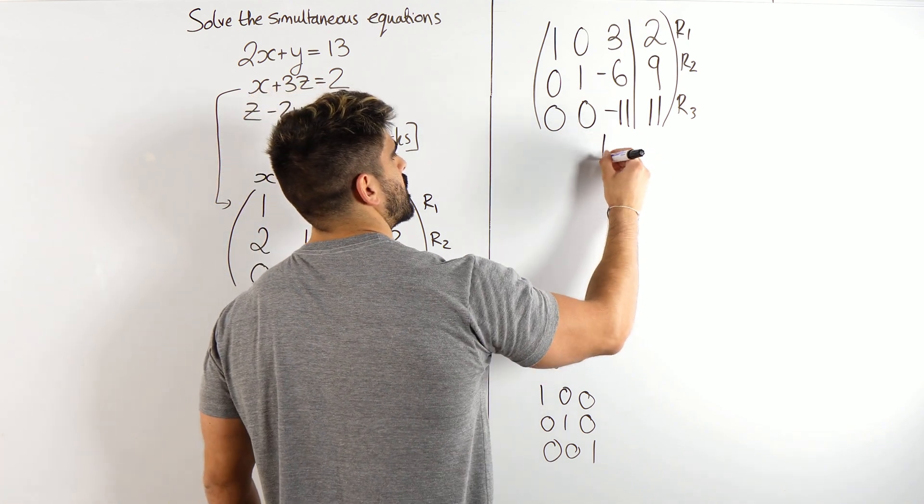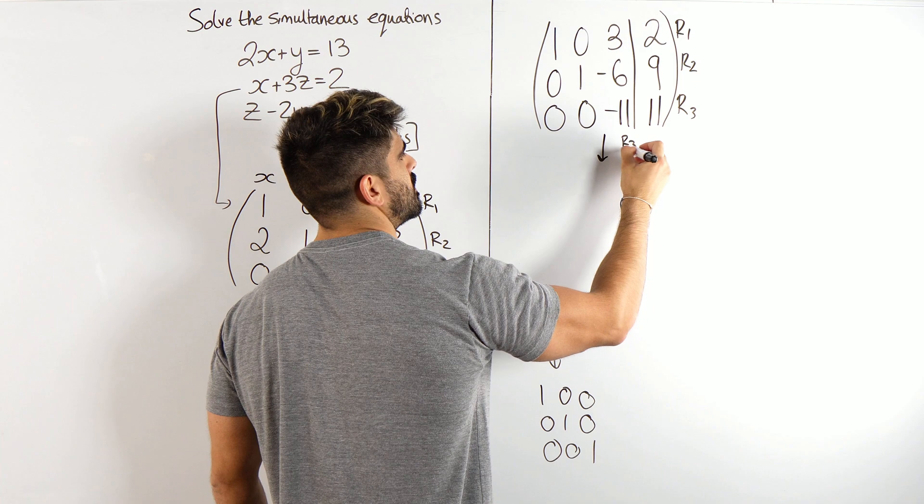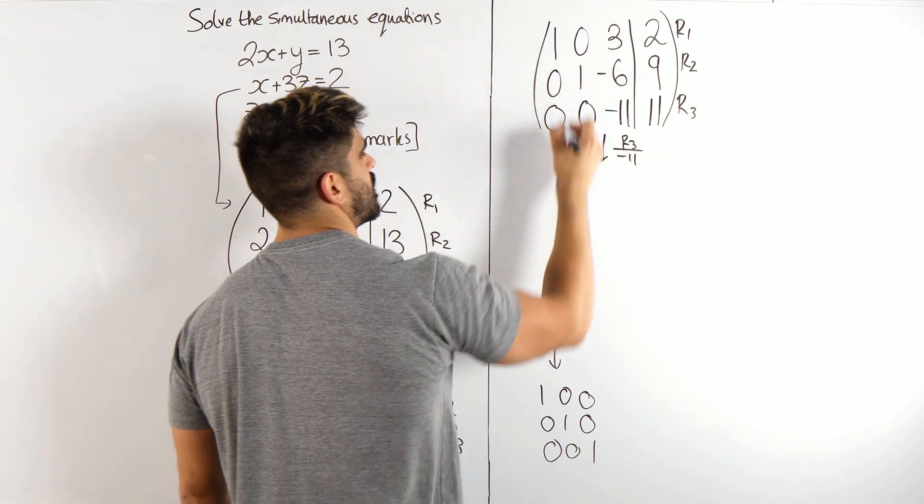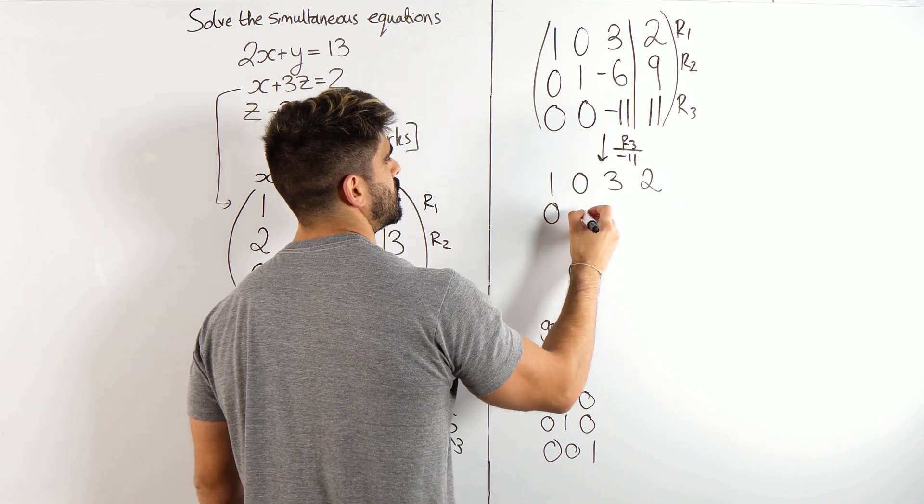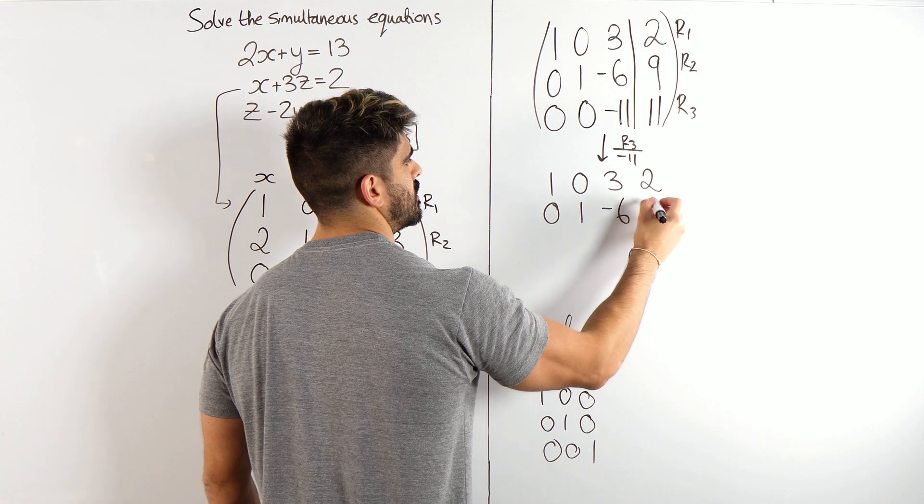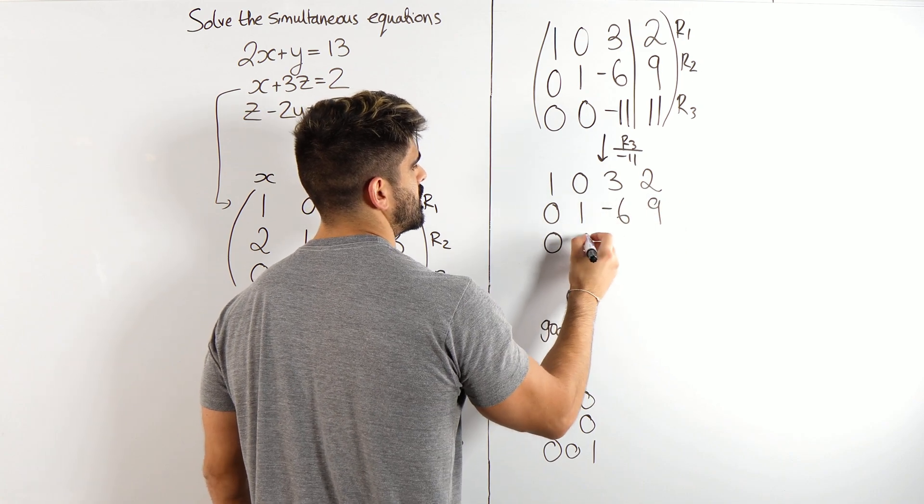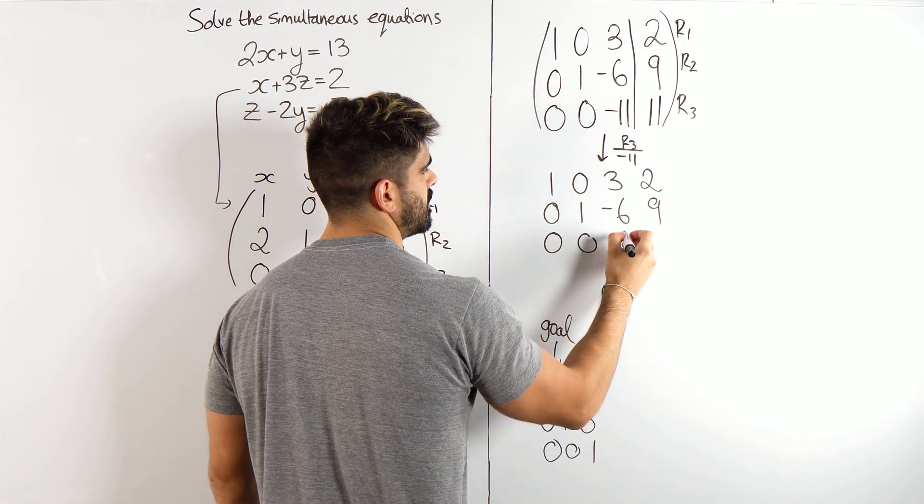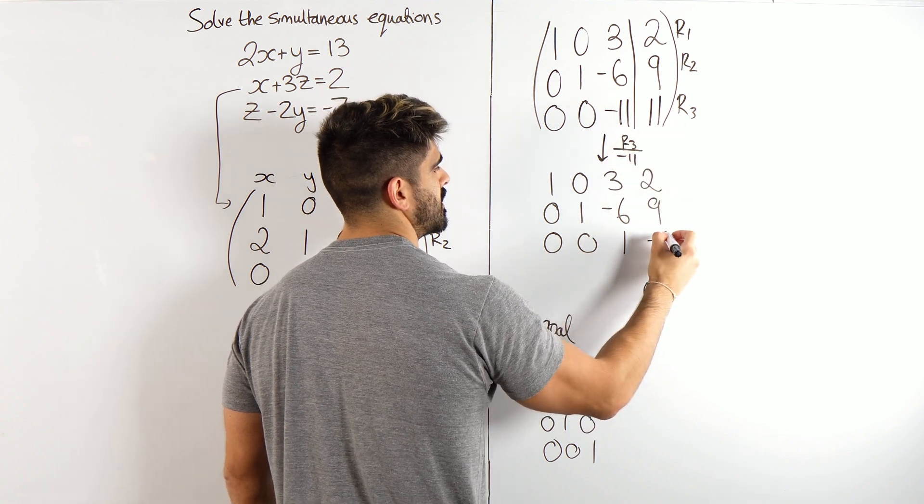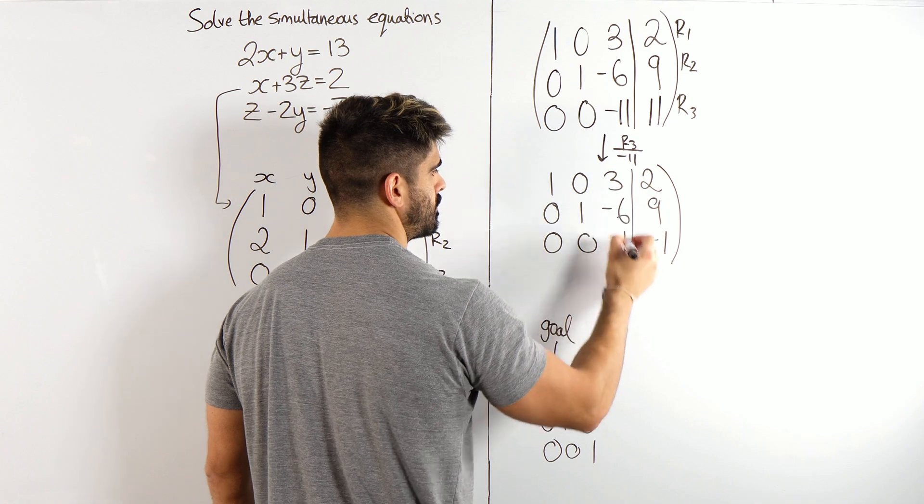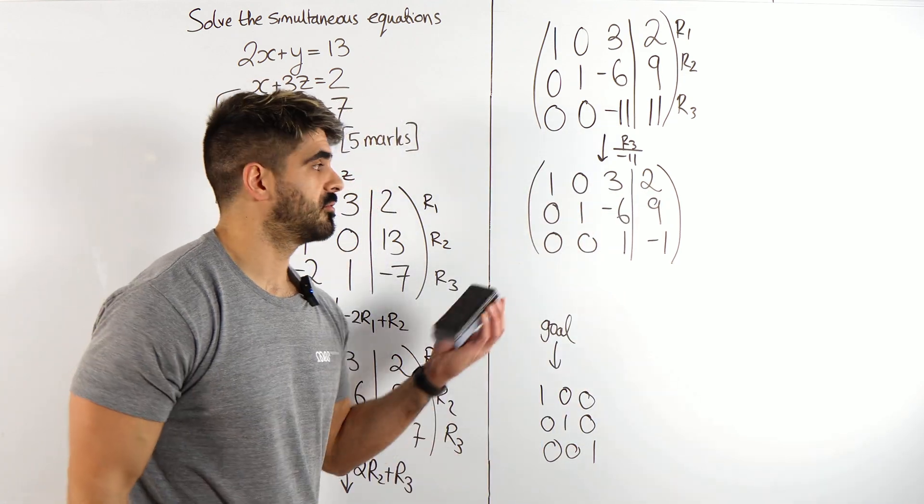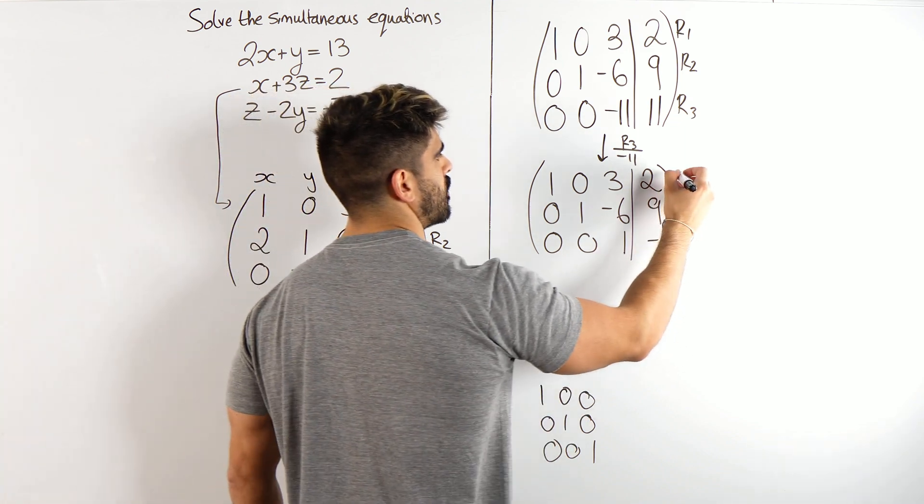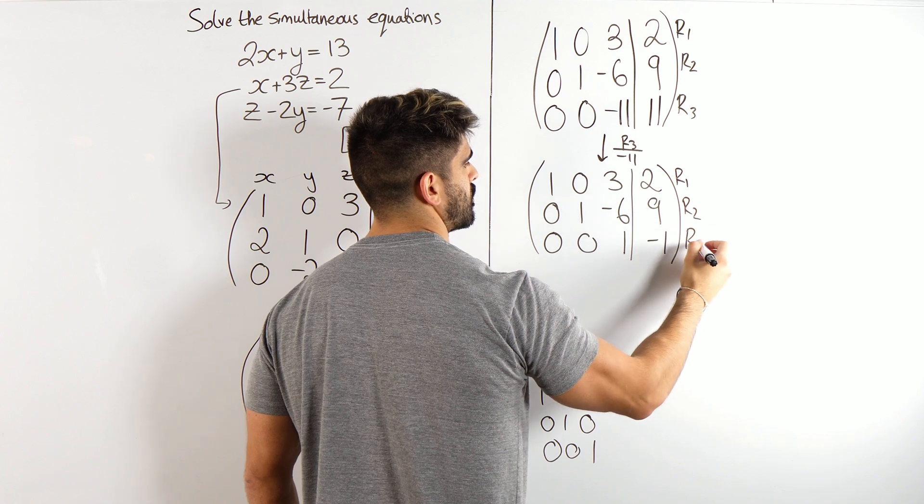So I'm going to do row 3 divided by minus 11. So I'll have 1, 0, 3, 2. Then I have 0, 1, minus 6, 9. Then I have 0, 0. 11 divided by minus 11 is 1. 11 divided by minus 11 is minus 1. Now, we're very close to reaching our goal. So we have row 1, row 2, and row 3.